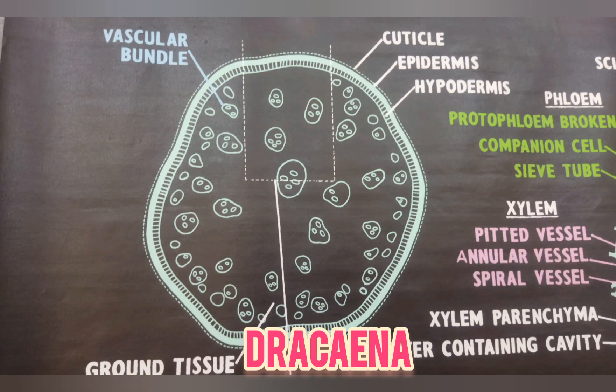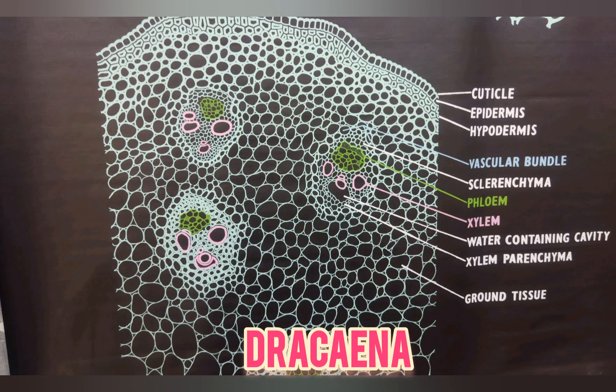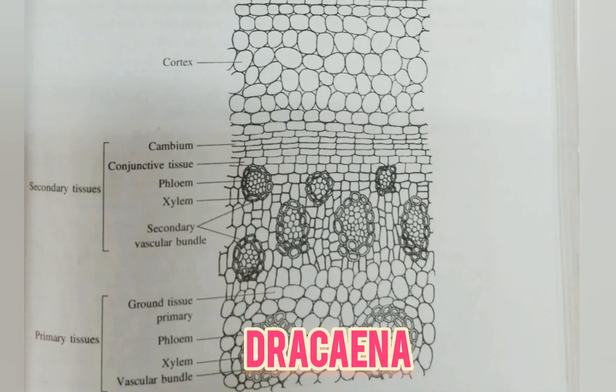The cambium cuts off a few cells on the outer side and a large number of cells towards the inner side. The cells cut off towards the outer side are parenchymatous, and the cells cut off towards the inner side are partially parenchymatous and partially vascular in nature. The parenchyma cells on the inner side get lignified in their cell walls and form the conjunctive tissue.